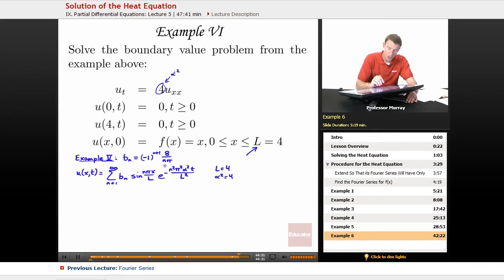I think that's all we need. We can plug everything in here. I'm going to factor out an 8 over pi because that's the same everywhere. 8 over pi from the bn. Now we've got negative 1 to the n plus 1 over n, sine of n pi x over 4.